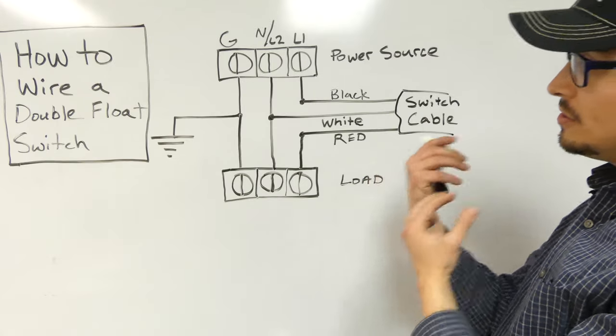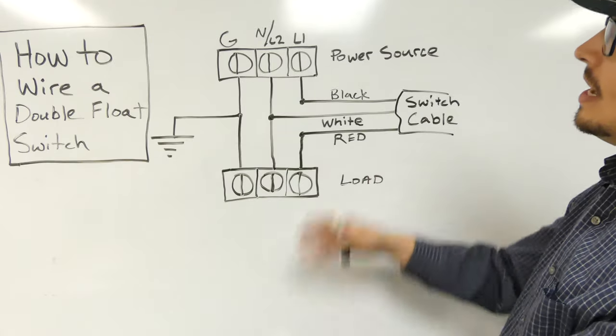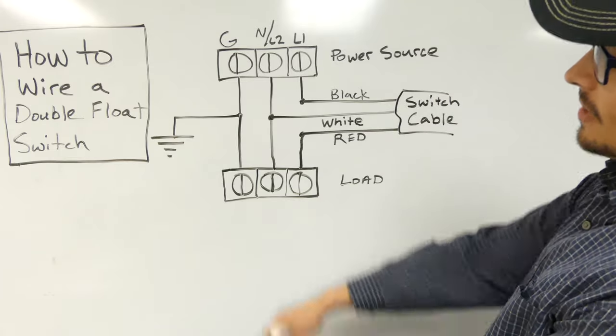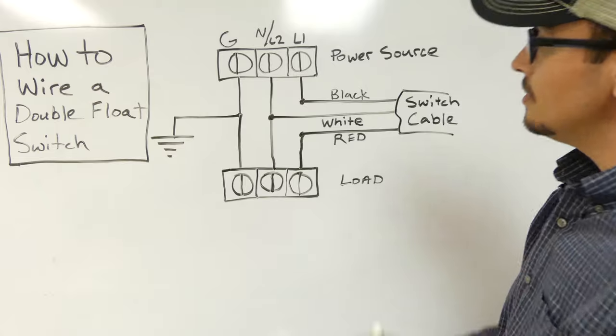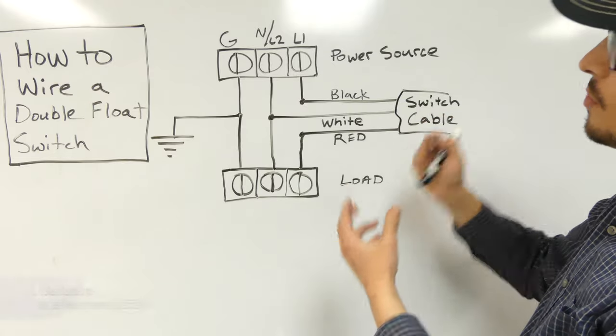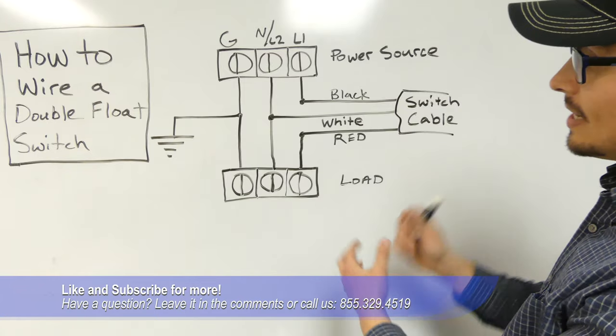And that's what we're accomplishing with the relay and holding circuit that's created when both floats come up. And then that holding circuit doesn't break connection or lose power until that bottom float falls back down, which is what gives us that wider range of pumping. So hopefully this quick demonstration showed you simply where your wires go when you're trying to wire a double float switch.